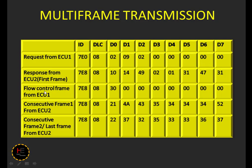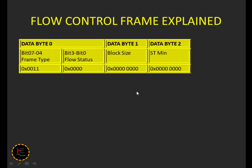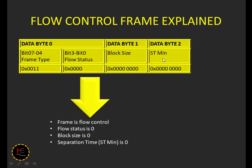From this example we can look at the flow control frame. Data byte zero's first nibble represents the frame type and the second nibble represents the flow status. Data byte one represents the block size and data byte two represents the separation time minimum.